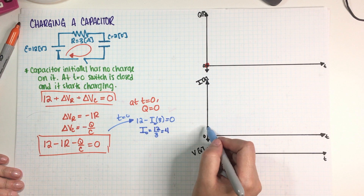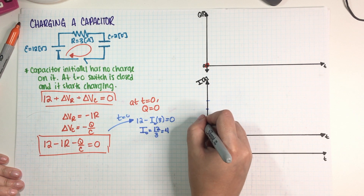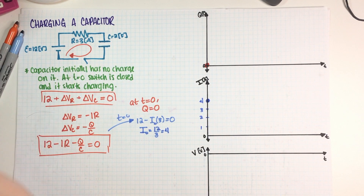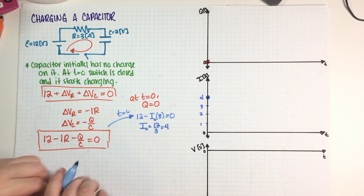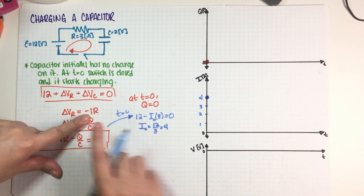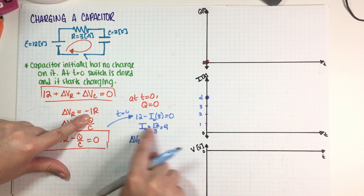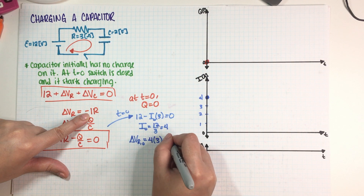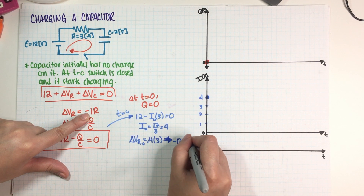So my initial current is 4 amps, and it starts at 4 on the graph. The initial voltage across the resistor — remembering that voltage equals negative IR — is the initial current times the resistance: 4 times 3, which is negative 12 volts.